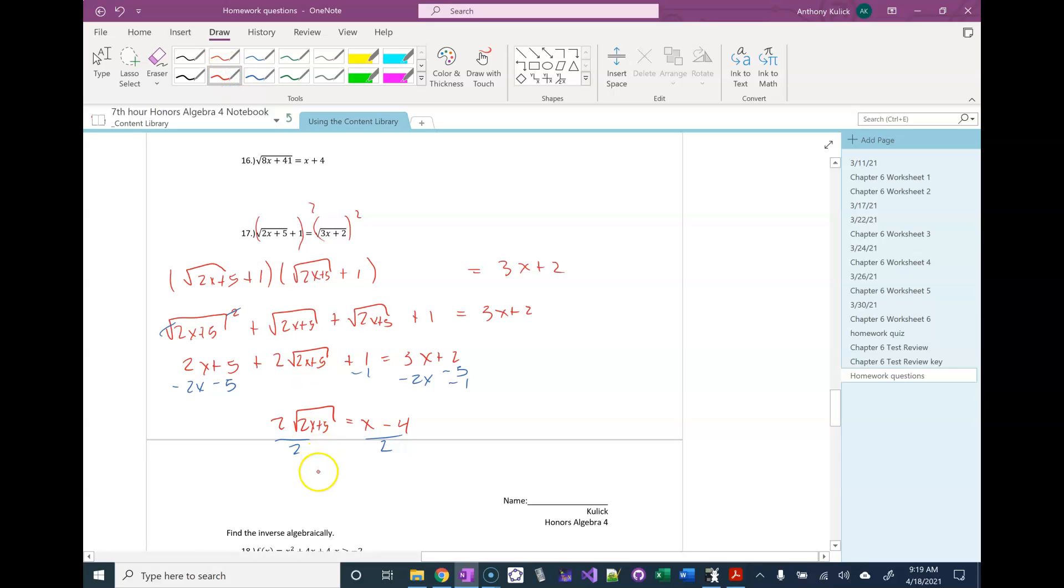Since we've eliminated one radical, we have to isolate to eliminate the other radical. Now, it's going to be square root of 2x plus 5 equals x over 2 minus 2. And actually, I think I'm going to leave that as x minus 4 over 2 this way. It'll be a little bit easier to FOIL it.